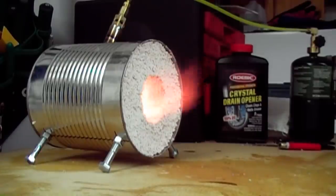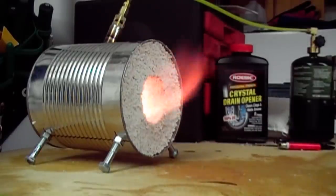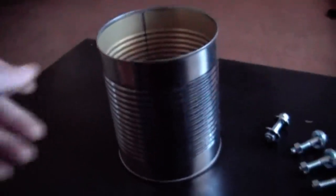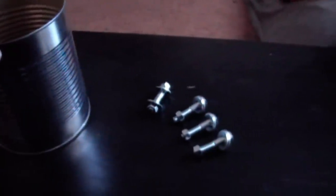In this video, I'm going to show you how to make a small homemade hobby forge. The forge is made out of a number 10 can, commonly referred to as a coffee can, and some nuts and bolts.